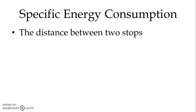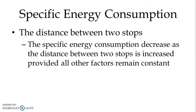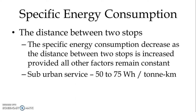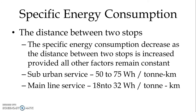The distance between two stops: the specific energy consumption is in proportion with the distance to be traveled by the train between stops. Specific energy consumption decreases as the distance between two stops is increased, provided all other factors remain constant. When the distance is higher between two stops, the free running time is more. Typical values are 50 to 75 watt hours per ton km for suburban service, and 18 to 32 watt hours per ton km for main line service.